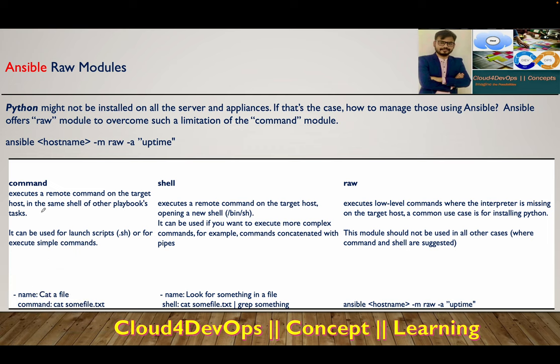The command module runs a command on your remote host within the same shell and returns the output. Shell opens up a new shell to run the command and fetch information from the managed host. The difference between shell and command is that shell opens a new shell, whereas command uses the existing shell to get the response.